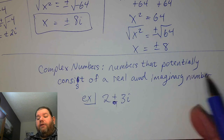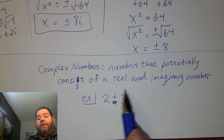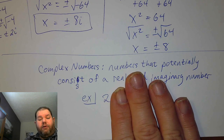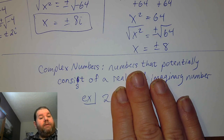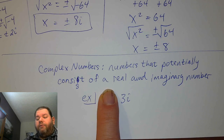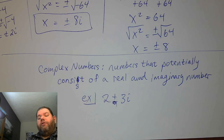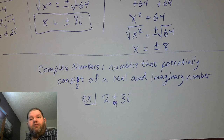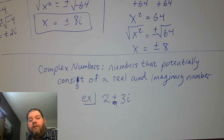With complex numbers, the number potentially consists of a real and imaginary part. Technically it doesn't have to have both — just the number 2 by itself is considered a complex number, even though we more specifically call it a real number. And 3i is also a complex number, even though more specifically it's an imaginary number. Real numbers and imaginary numbers are subsets of the complex numbers.